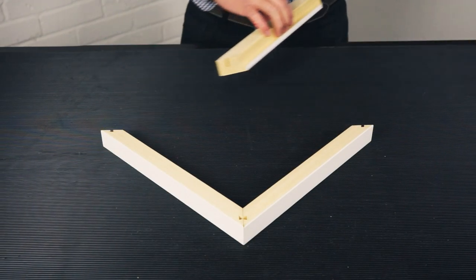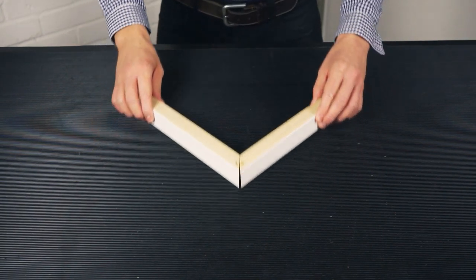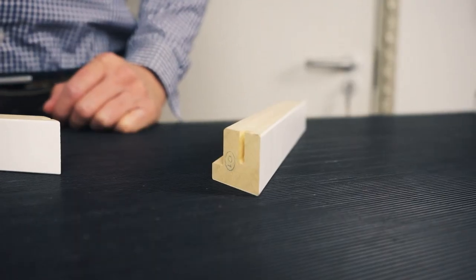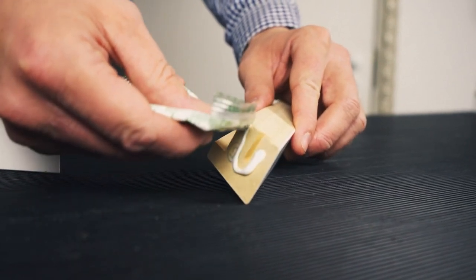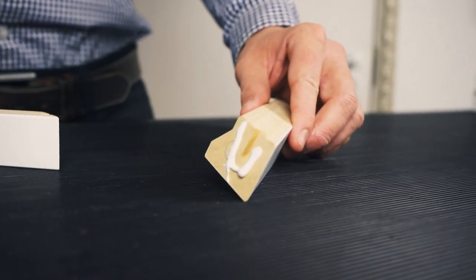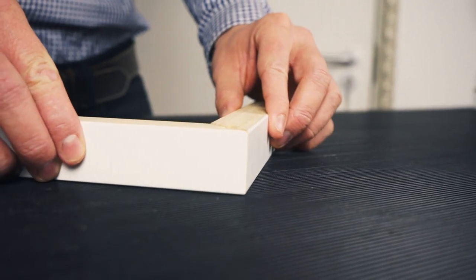Step one is to take two of your lengths and give an even coating of glue onto one of the sides, then push them together to line up the holes.